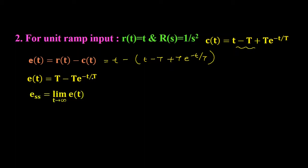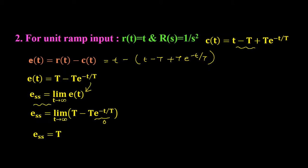By the final value theorem, the steady-state error e_ss is given by the limit as t → ∞ of e(t). Substituting the value of e(t), as t → ∞ the exponential term e^(−t/T) becomes zero. Therefore the steady-state error equals T, the time constant RC. So the steady-state error depends on the values of R and C.